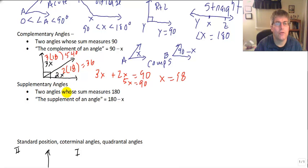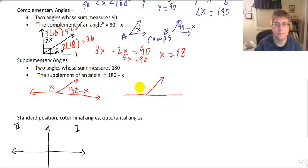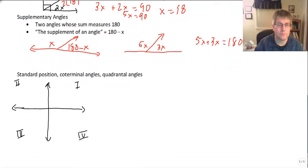And the same thing with supplements. Two angles whose sum measures 180 degrees are supplementary. We could have two angles that form a straight angle. And if that angle is X, that one would be 180 minus X. Or we could split them up again in the ratio. We could say that would be 5X and that would be 3X. 5X plus 3X equals 180, and then we could solve. I'll save that one for you to do in class. Those numbers aren't going to be too friendly, I don't think.